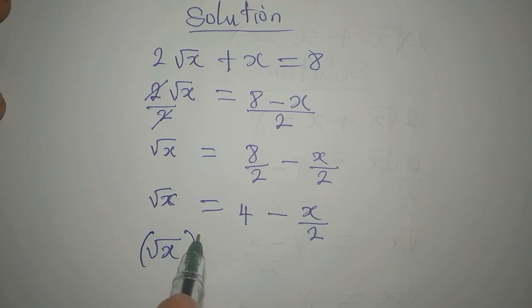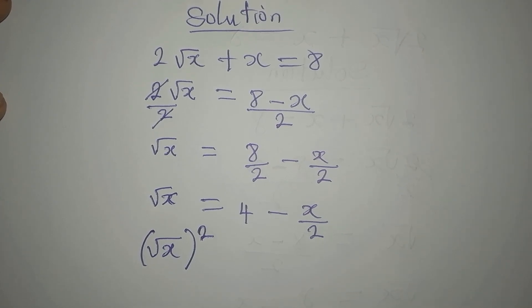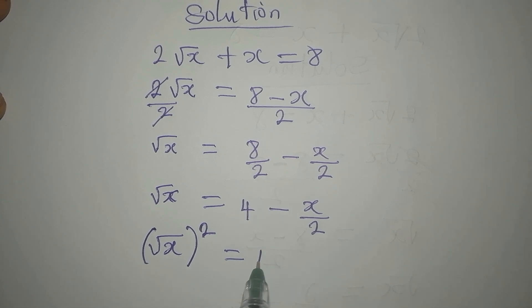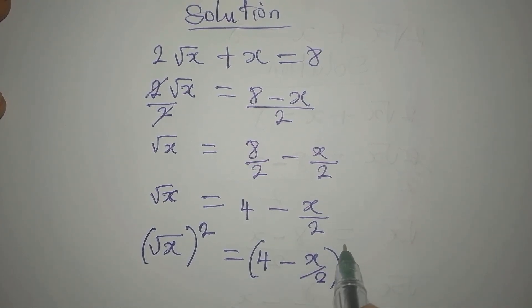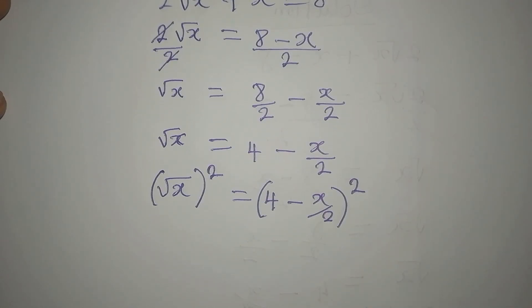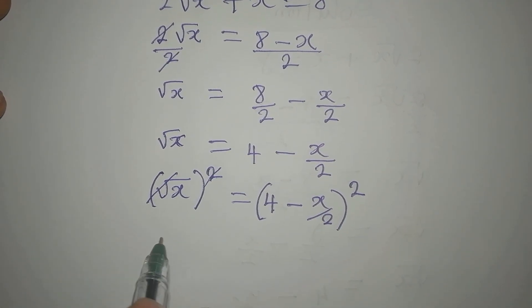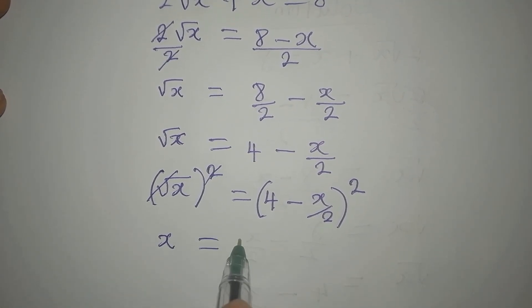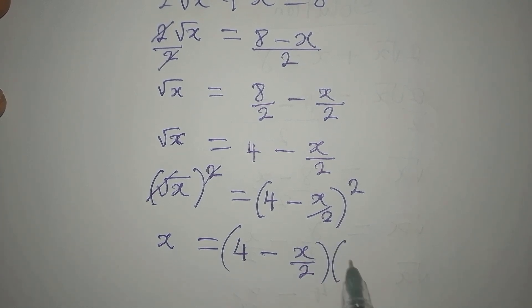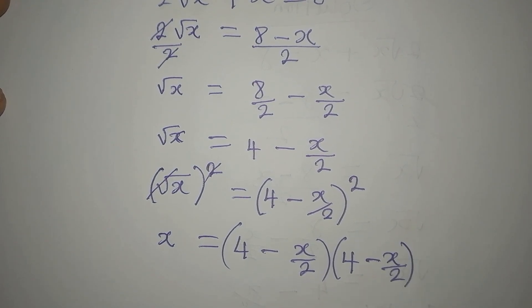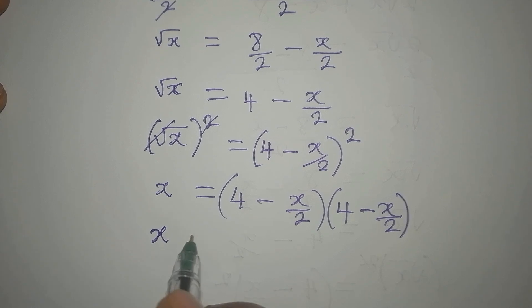We are going to square both sides. The reason for squaring both sides is to remove the square root. So on the right side we have (4 - x/2) squared, and squaring removes the radical, leaving x on the left.